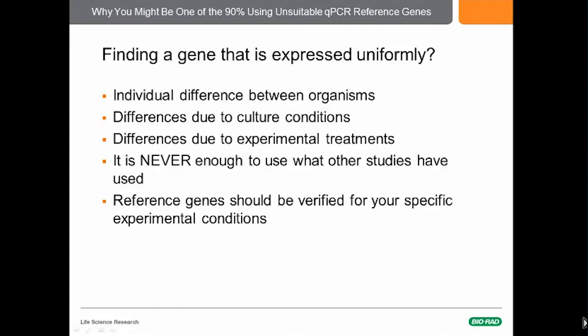How do you find a gene that's expressed uniformly? That's difficult because there are individual differences between organisms, differences due to culture conditions, and differences due to experimental treatments. It is never enough to use what other studies have used, because the conditions may be different and we can't always assume that they have verified their reference genes. So reference genes should be verified for your specific experimental conditions.